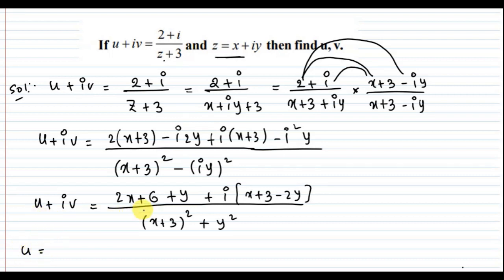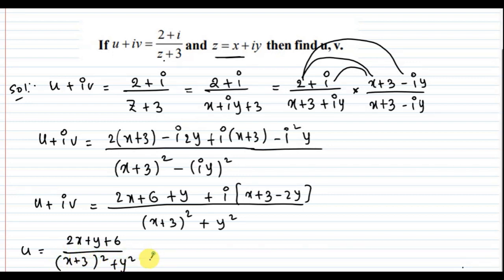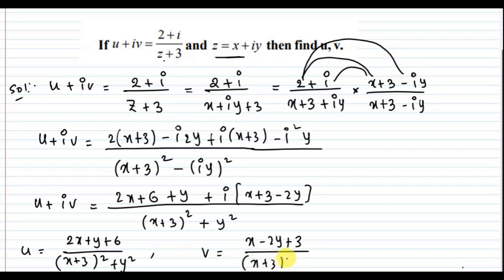Therefore, u equals 2x plus 6 plus y divided by x plus 3 whole square plus y squared, which is the real part. And v equals x minus 2y plus 3 divided by x plus 3 whole square plus y squared, which is the imaginary part. This is the answer.